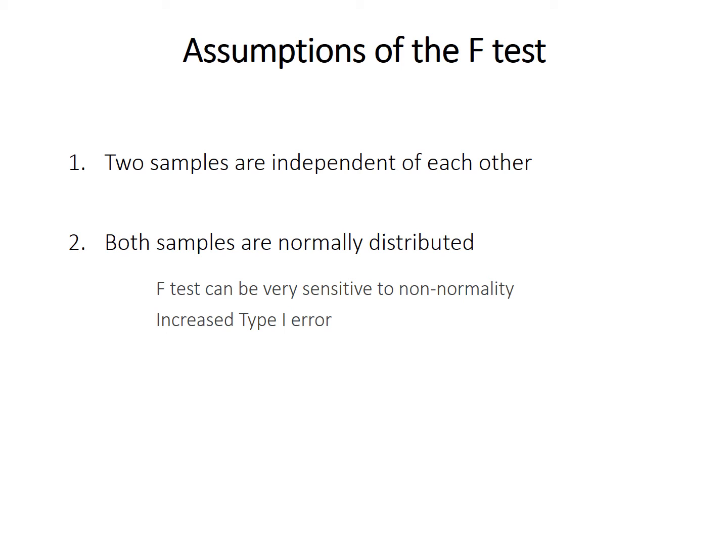The second requirement is that both samples are normally distributed. The data in each sample follows a normal distribution. Unlike the t-test in the previous video, which can be a little bit forgiving for this assumption, the F-test is actually quite sensitive. If you perform an F-test on non-normal data, what you end up with is an increased risk of type 1 error.